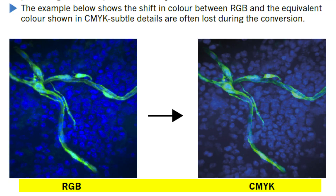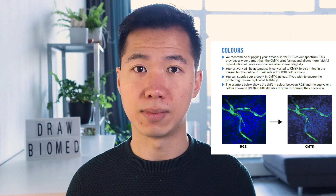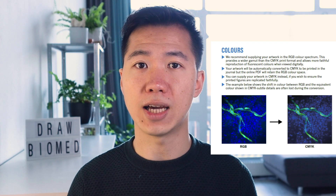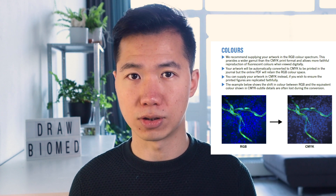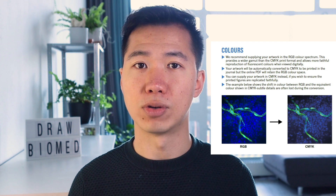Before you start to draw any scientific illustrations, you have to get your RGB and CMYK settings right because they have a big impact on how your colors will look in the end. The main difference between RGB and CMYK is that RGB is for displaying on monitors and devices, and CMYK is for printing. The reason you have to get the color modes right is that what you see on the monitor is not necessarily what you will get after you print it out — and there is actually a scientific reason behind this.